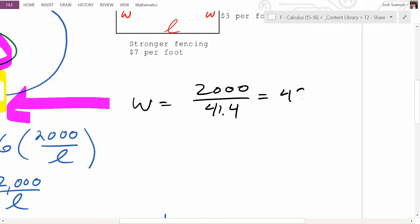48 point 3, 1. So we think it's 41.4 by 48.31. Excellent. So that would be the dimensions.